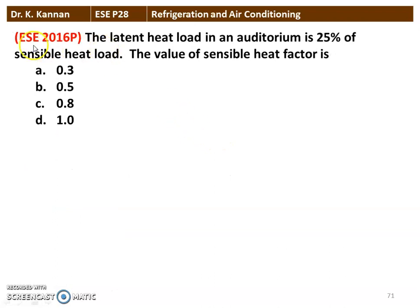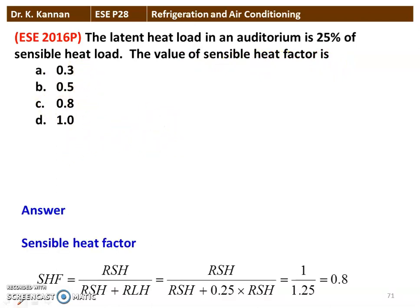Next question from the 2016 question paper: The latent heat load in an auditorium is 25% of the sensible heat load. The sensible heat factor is calculated as: SHF = RSH / (RSH + RLH) = RSH / (RSH + 0.25·RSH) = 1 / 1.25 = 0.8. The sensible heat factor is 0.8.